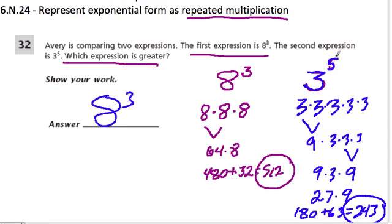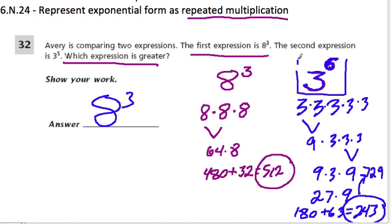Now, if it was 3 to the 6th power, what would happen? Well, you take 243 and multiply it by another 3. 3 times 200 is 600, plus 3 times 40 is 120 — so that's 720 — plus 3 times 3 is 9, so it would be 729. And then that would be bigger than 8 to the 3rd. But it wasn't — it was 3 to the 5th, so it was in fact smaller. Just be careful.